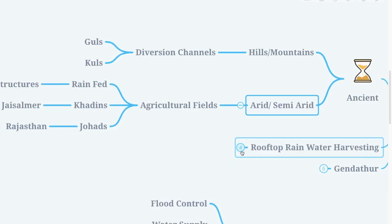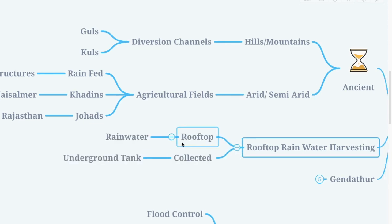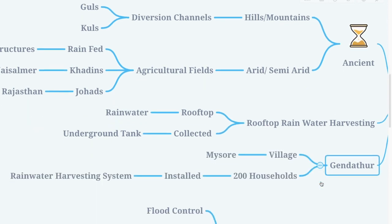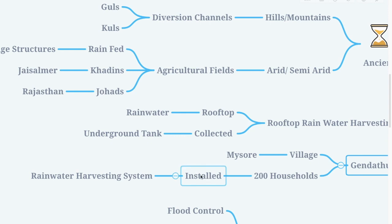Rooftop rainwater harvesting means rainwater from the rooftop is collected in an underground tank. Gendatur is a very remote village in Mysore where 200 households have installed rainwater harvesting systems. It is even said that 20 houses collected about 1 lakh liters of water just by doing rainwater harvesting.